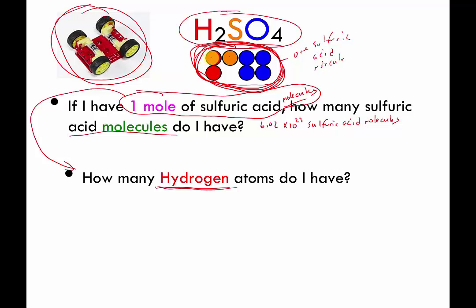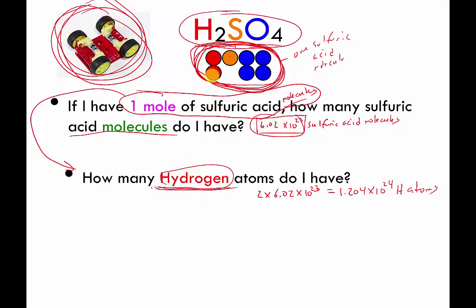If you unpause, you should realize that inside of this egg, inside of one molecule, there are always twice as many hydrogens. So if I have this many sulfuric acids, I have twice as many hydrogens, and that's 2 times 6.02 times 10 to the 23, which is 1.204 times 10 to the 24 H atoms. And again, this is similar to asking how many wheels. If you have 10 cars, how many wheels do you have? Well, there's four wheels on a car, so I must have 40 wheels.